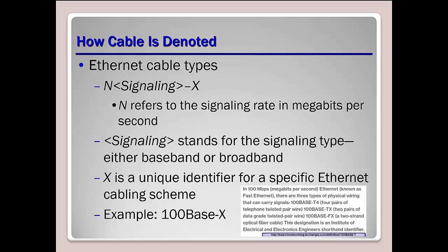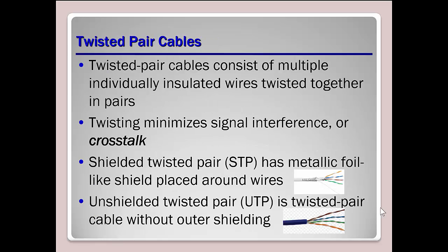For example, 100BaseX. A couple more examples: 100BaseT4 uses four twisted pairs of telephone twisted pair wire. Twisted pair cables are what we pretty much think of today when dealing with the idea of Ethernet cables.